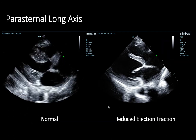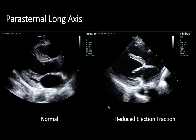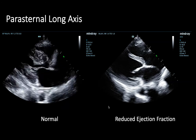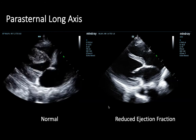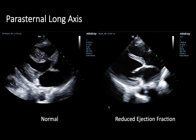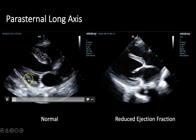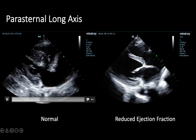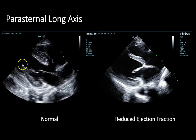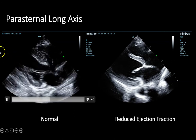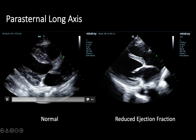Let's take a look at this parasternal long axis view of the heart. This clip shows a normal heart. I'd like to pay particular attention to the ejection fraction, keeping in mind that normal is about 55% or higher. We can appreciate that the walls of the LV are contracting concentrically together and coming quite close to an imaginary line drawn through the LV. This represents a normal ejection fraction.